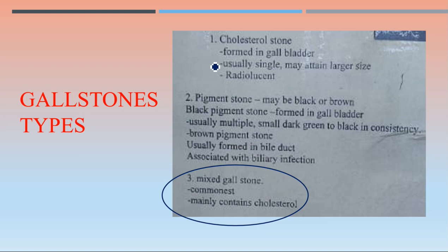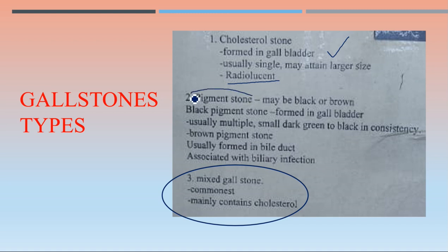Regarding cholesterol stones: they are formed in the gallbladder, usually single but may attain larger sizes, and are radiolucent. Pigment stones may be black or brown. Black pigment stones are formed in the gallbladder - usually multiple, small, and dark green to black in color. Brown pigment stones are usually formed in the bile duct and are associated with biliary infection.